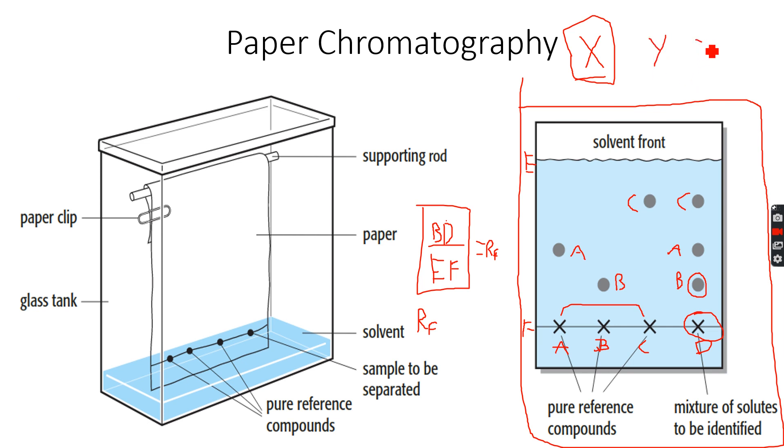So the RF value of a solute for a particular solvent is always the same, and by calculating RF values therefore, we can look at tables and we can figure out which solute molecule this is—I mean, we can figure out the identity of that solute. So this is simple paper chromatography, and we have done all of this in our IGCSEs.